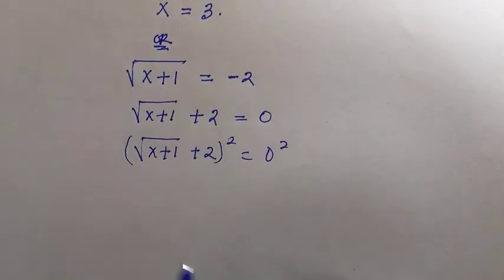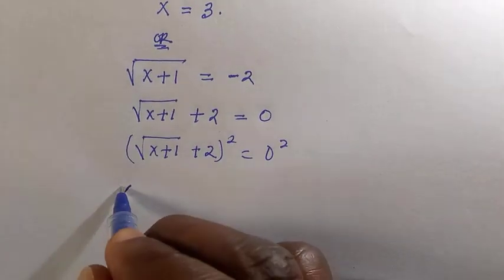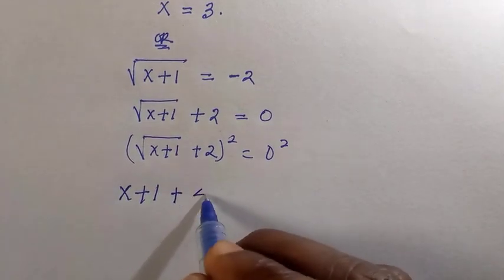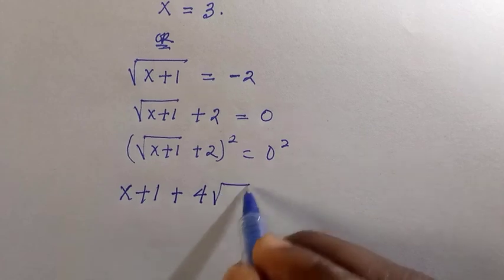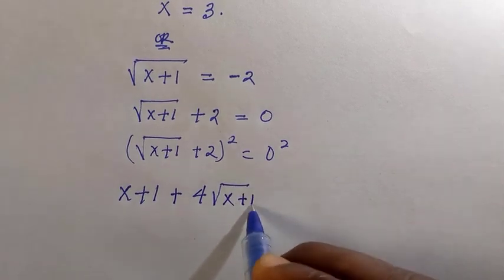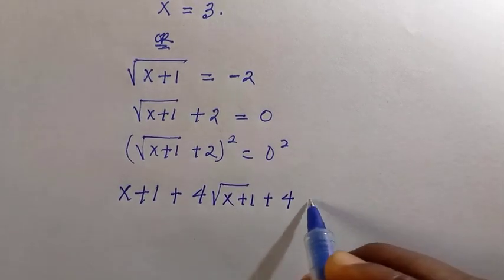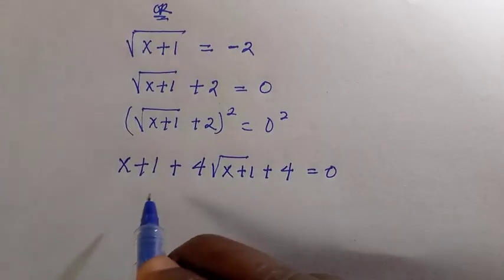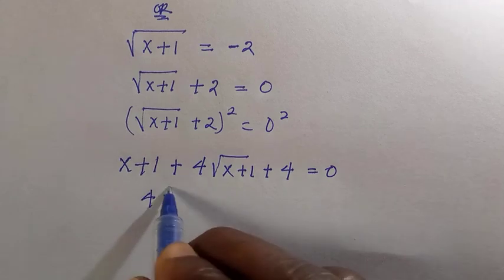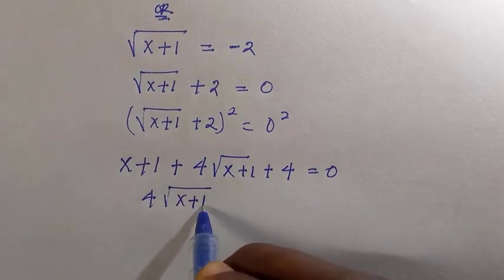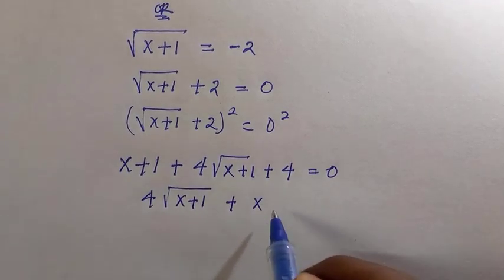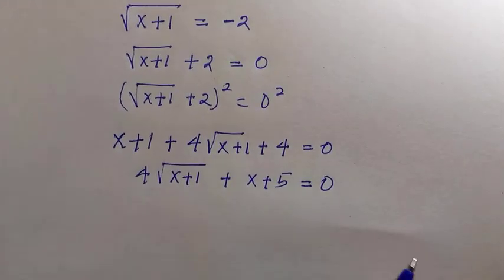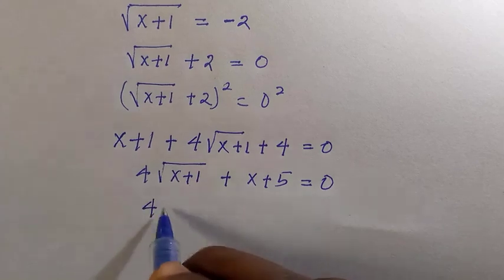The expansion of this becomes x plus one plus 4√(x+1) plus four, everything equal to zero. So if I make 4√(x+1) start this problem, then I'm going to add x plus five together because one and four can add each other.